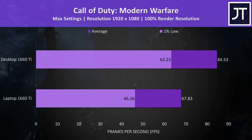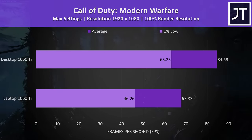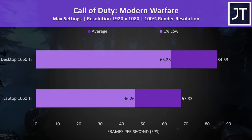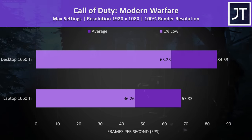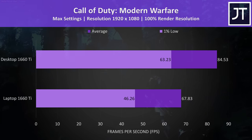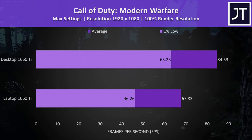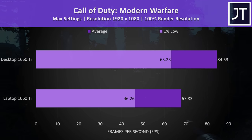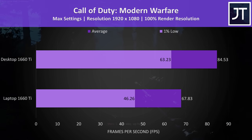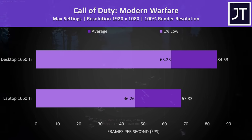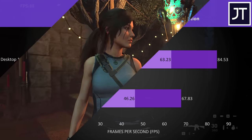Call of Duty Modern Warfare was tested in campaign mode, going through the same section of the game on both machines. This game saw the largest difference out of all titles tested, with the desktop graphics a massive 24% higher in average FPS, but a much larger 37% boost to 1% low.